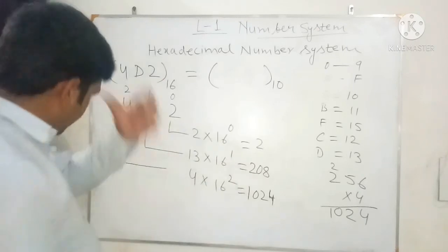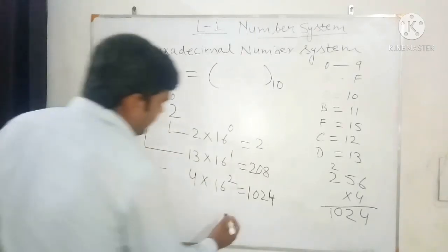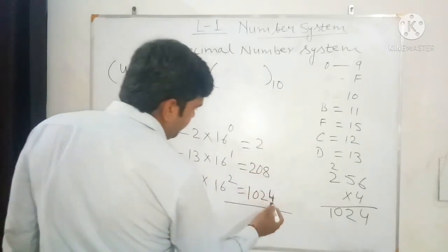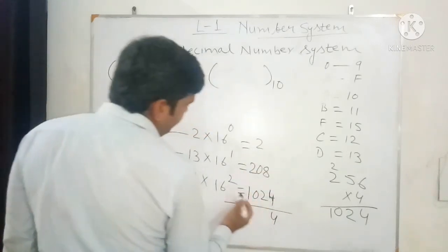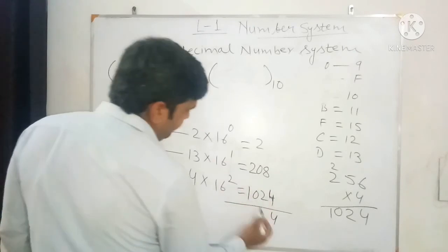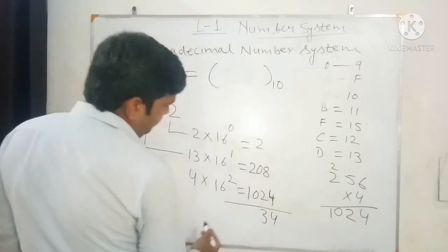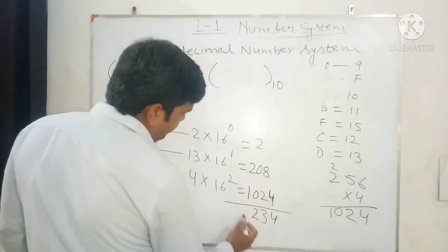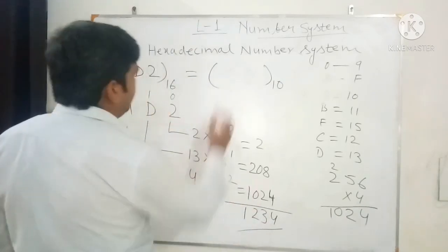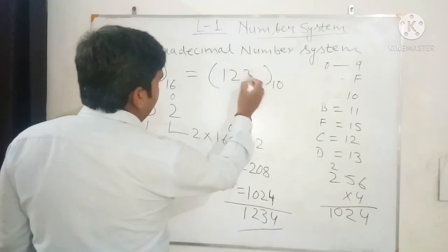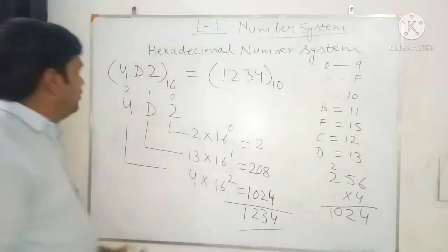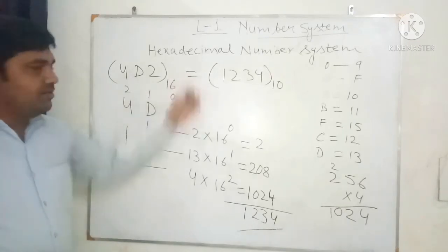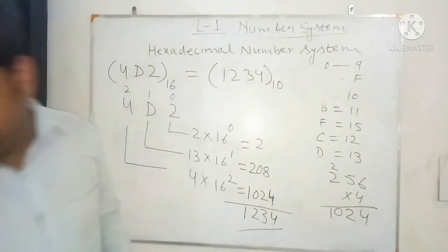Now we add the three numbers: 2 plus 208 plus 1024. Adding these gives 1234. So the decimal equivalent of the hexadecimal number 4D2 is 1234.